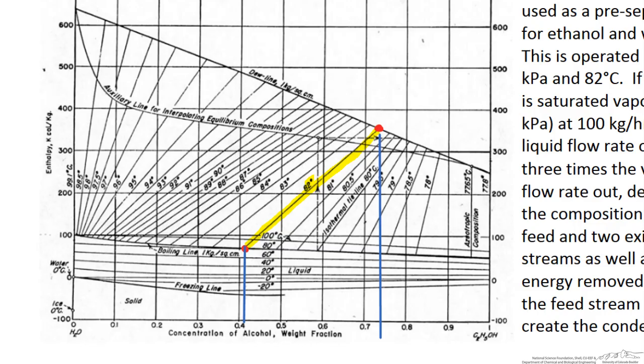We have determined that we have a 50% composition of ethanol in our feed stream and it is a saturated vapor. So if we go to 50% and we work up this line to our saturated vapor line we can read this off of the y axis to determine what the enthalpy of our feed is. We can do the same thing with our liquid stream as well as our vapor stream. So all I am going to do is read this enthalpy to get our specific enthalpy of our vapor and this gives us our specific enthalpy of our liquid.